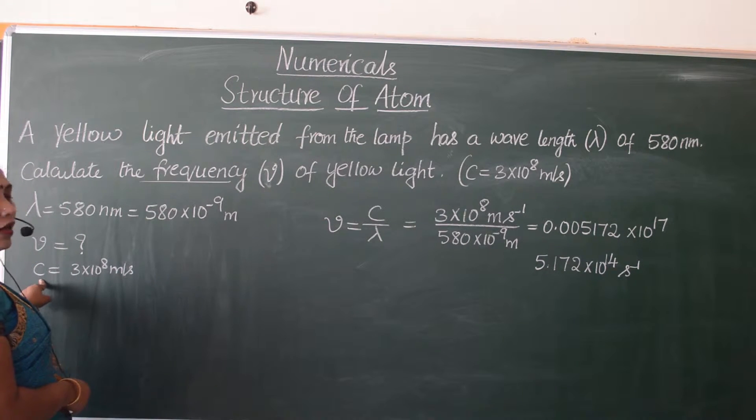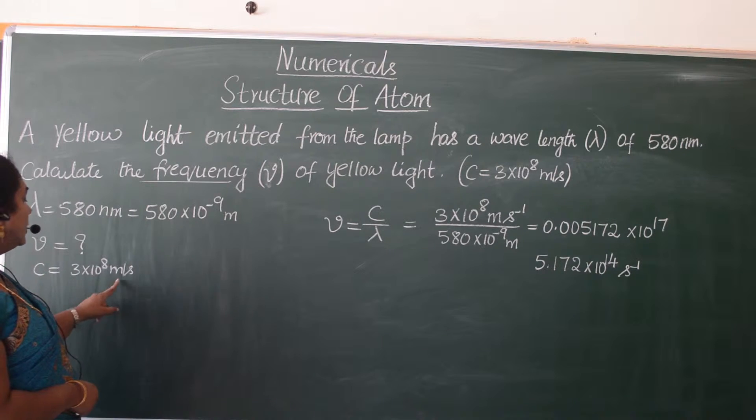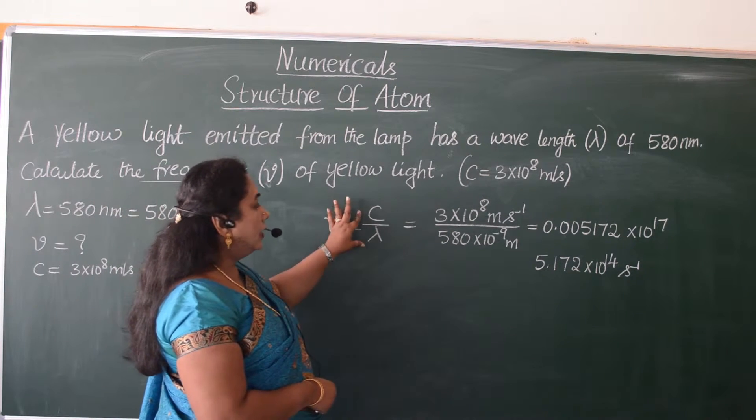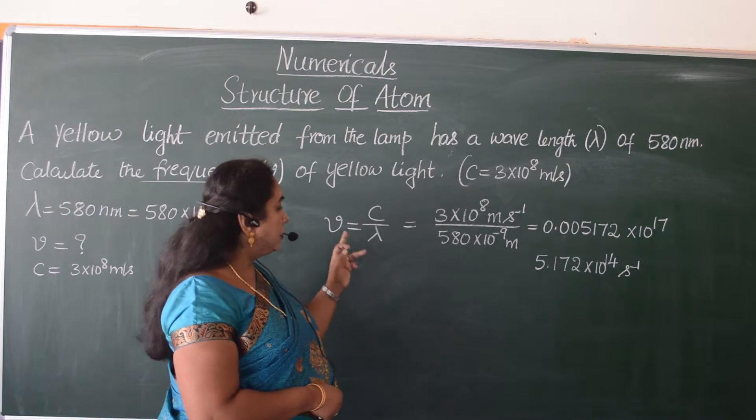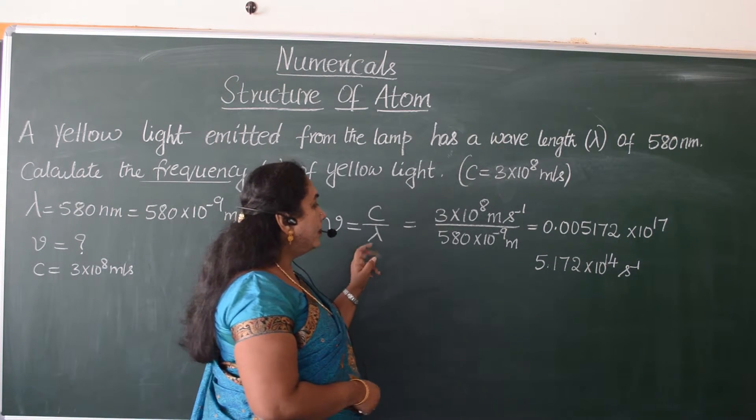Nu, the frequency, we are supposed to find out. The value of C is 3 × 10^8 meters per second. Now let us substitute the values as per this particular formula.